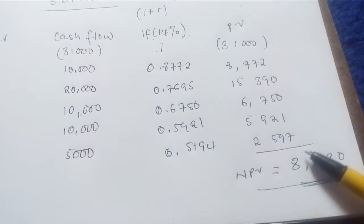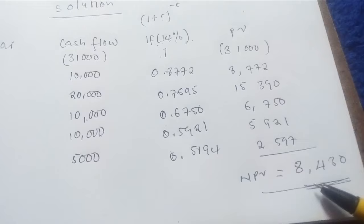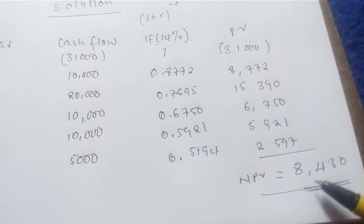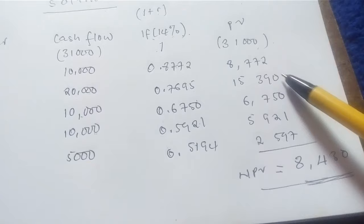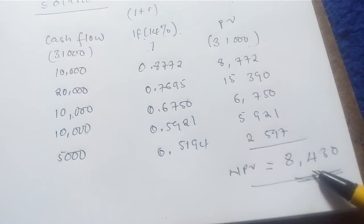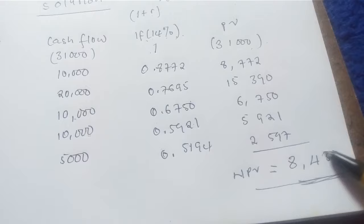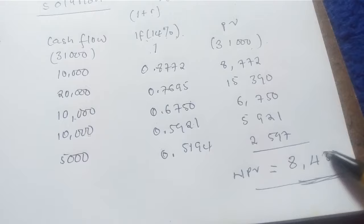To interpret this value, the decision rule for NPV is: if the NPV is positive, it means the present value of the cash flows is sufficient to cover the initial investment, and the project is viable. In this case, our NPV is $8,430, which is a positive value — hence this project is viable. That's how we find and interpret the net present value. Thank you for your time.